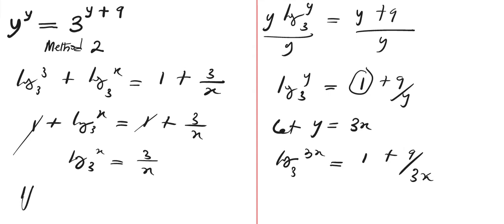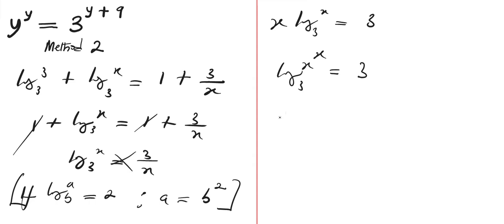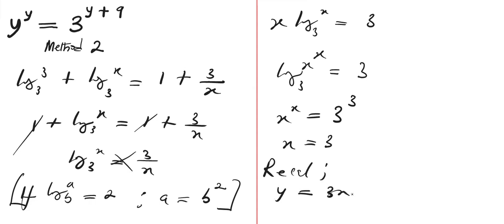Recall that if log of a to base b equals to 2, then a equals to b to the power of 2. Before applying this law, we can cross multiply to get x times log of x to base 3 equals to 3, which means log of x to the power of x to base 3 equals to 3. Applying the log law, x to the power of x equals to 3 to the power of 3. By comparison, x equals to 3. Recall y equals to 3x, so therefore y equals to 3 times 3, which equals to 9.